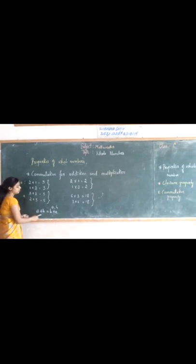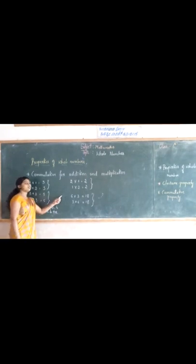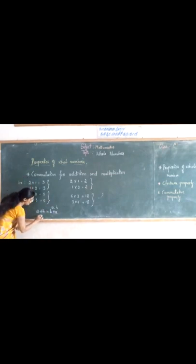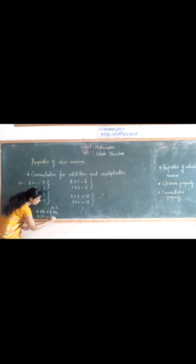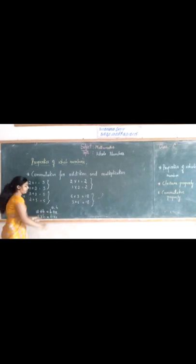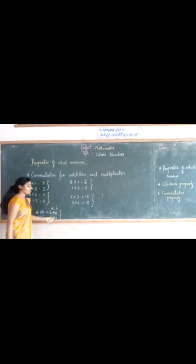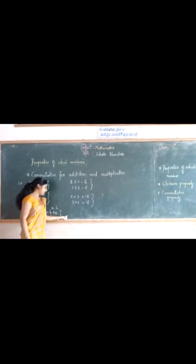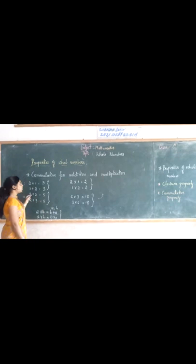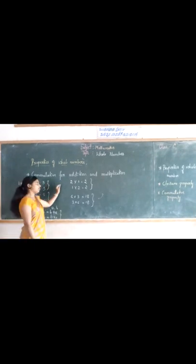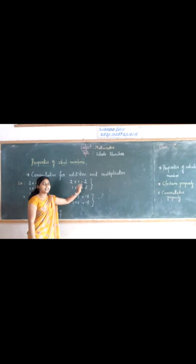Now it applies for multiplication. We cannot use the addition sign because we use multiplication, so we use the multiplication sign: A into B which is equal to B into A. Here the order of the numbers is changed but we obtain the same answer. So we can conclude that whole numbers are commutative for addition and multiplication.